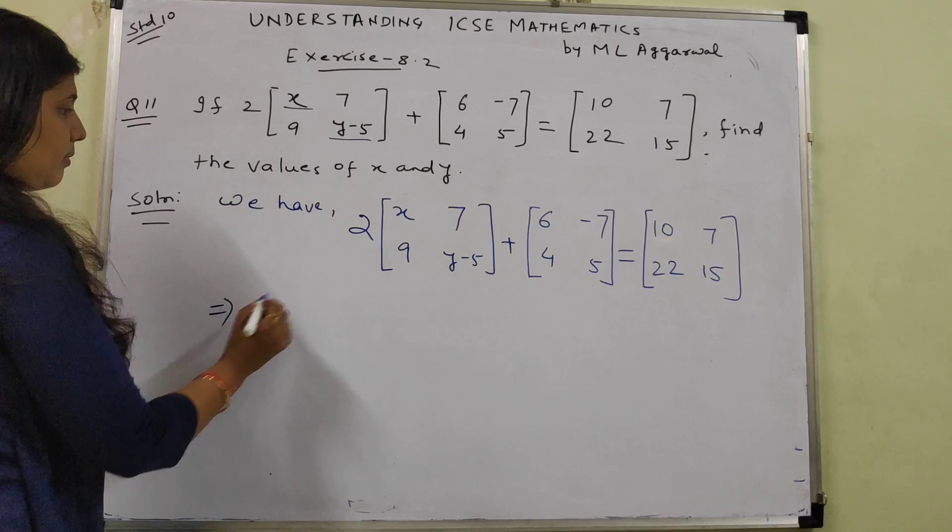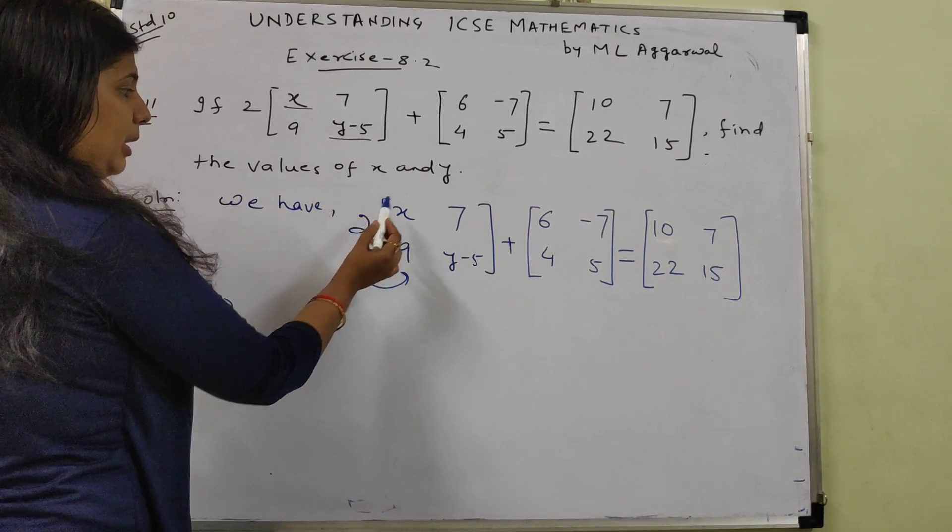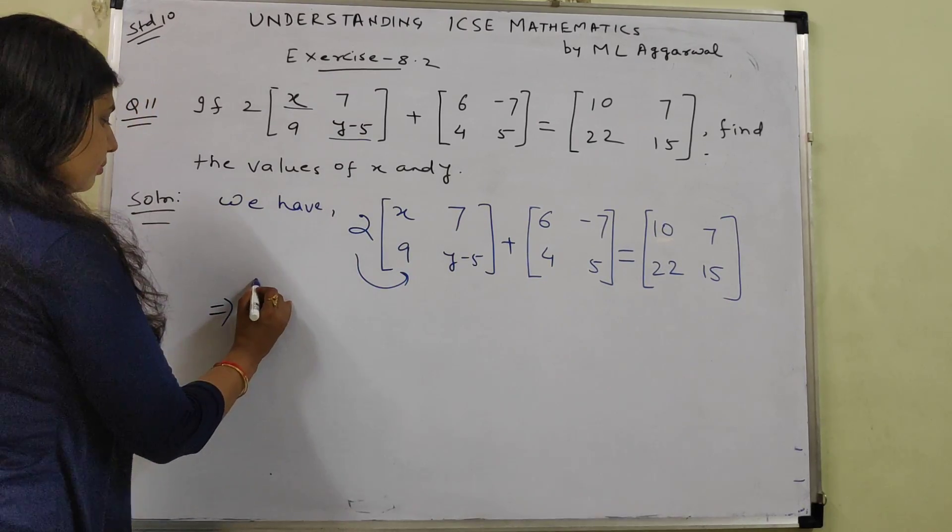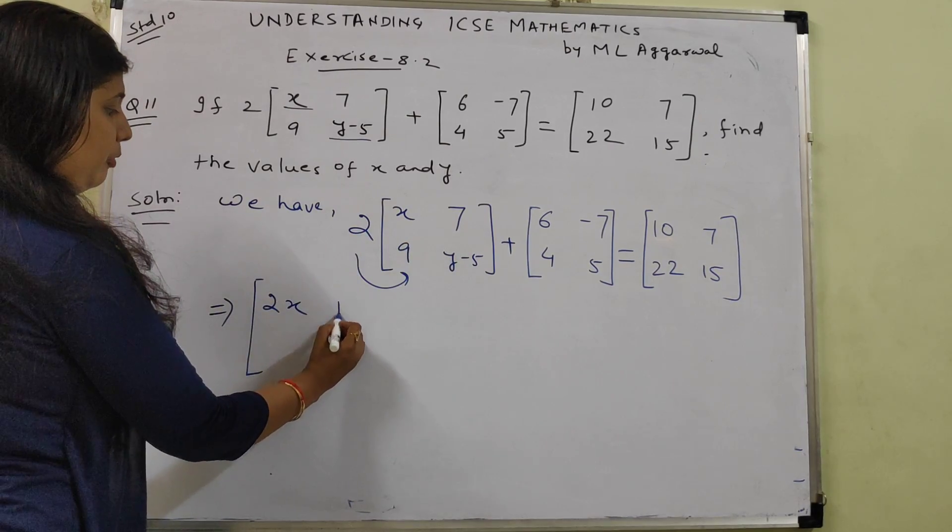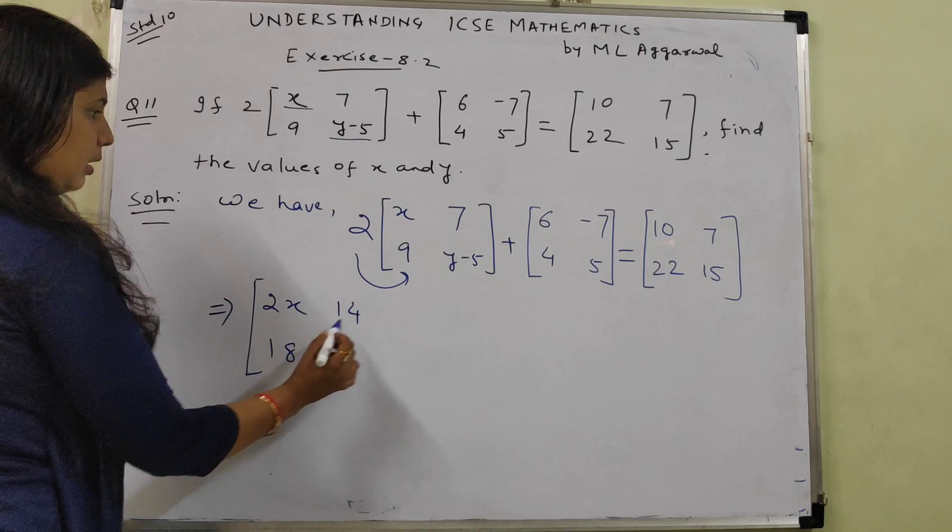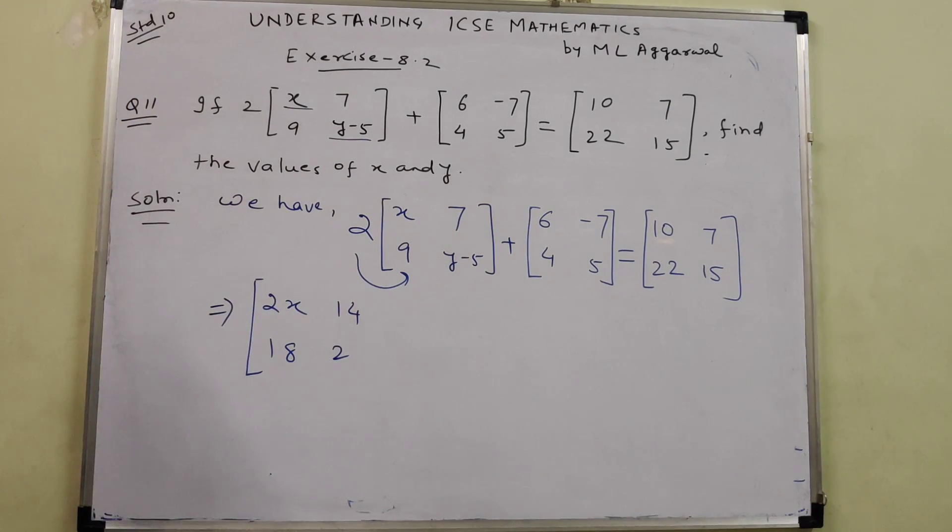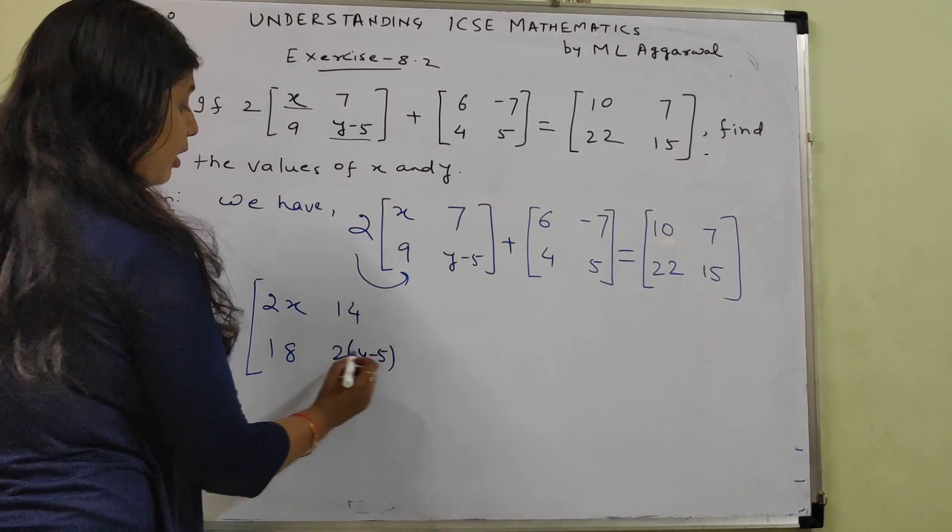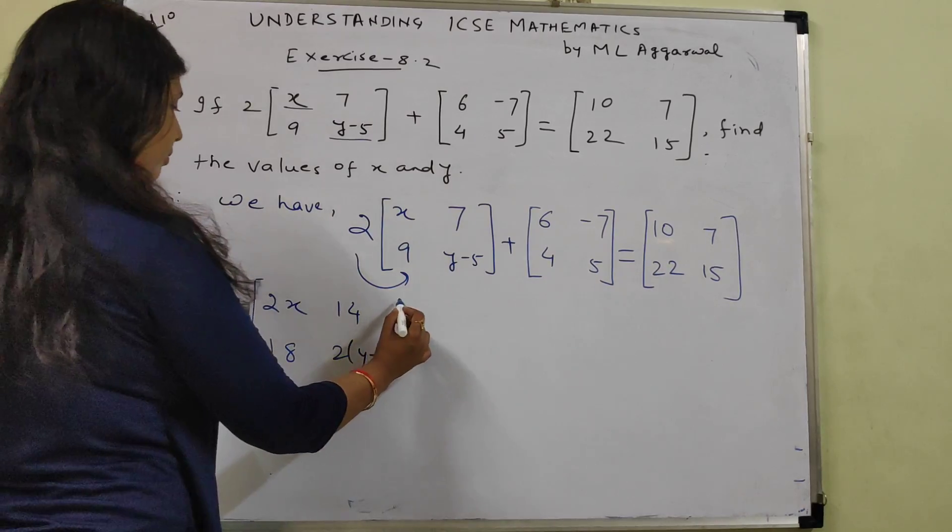Now scalar multiplication, where 2 will get multiplied with each and every quantity of the matrix. So will become 2X. This will become 14, 18. And how will we write this? 2 inside bracket Y minus 5, because 2 has to get multiplied with Y and 5 both.